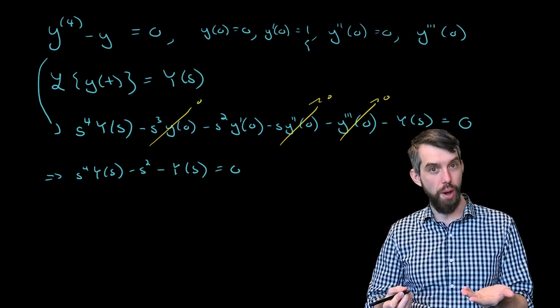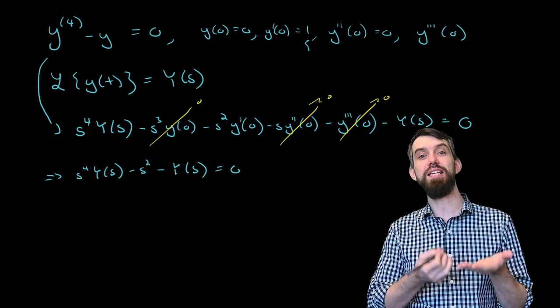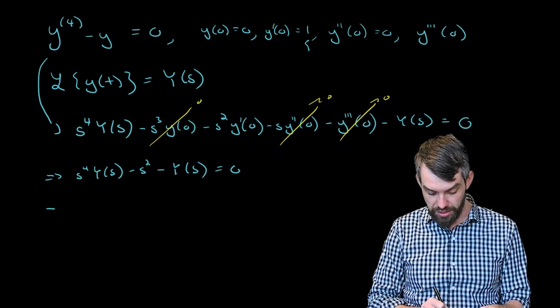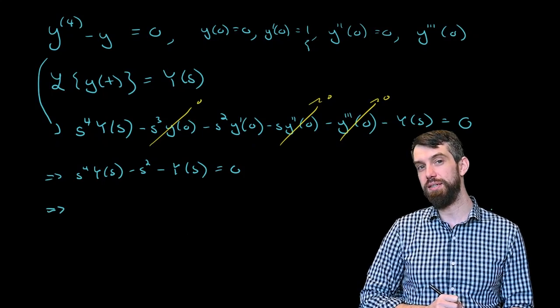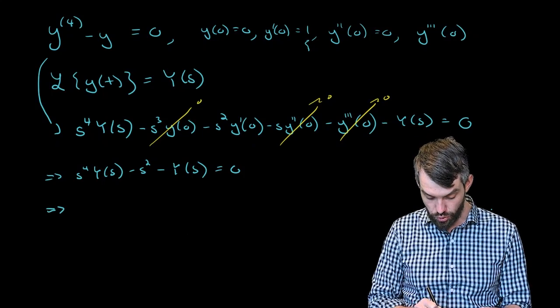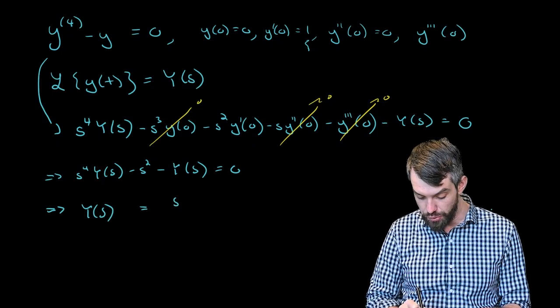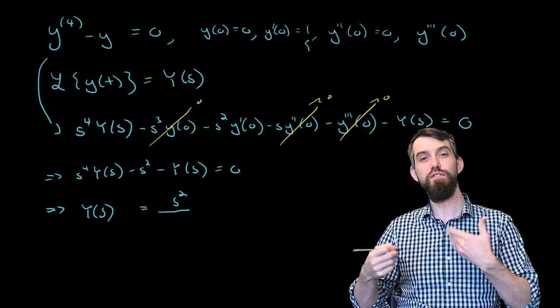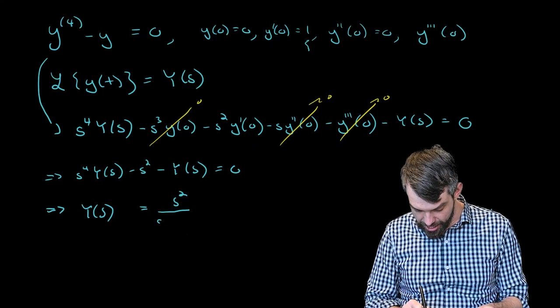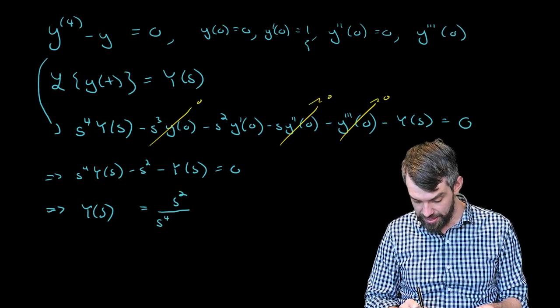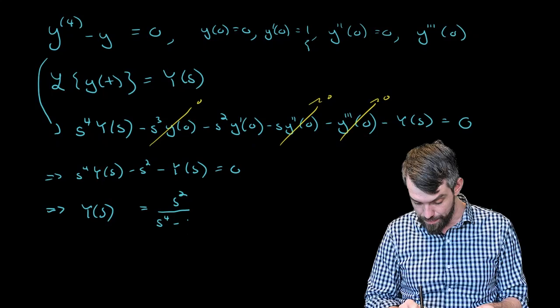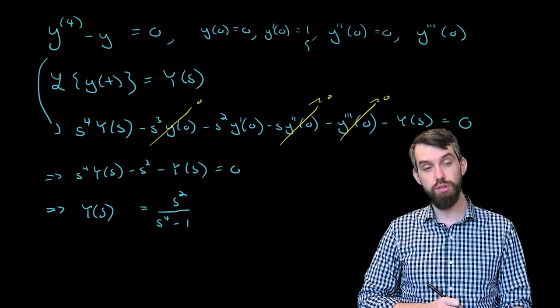Now I have an equation that is an algebraic one, and I want to solve for y as a function of s. This is relatively straightforward. The only thing that doesn't have a y in it is this s squared. So if I leave Y of s on the left-hand side, on the right-hand side I'll move that minus s squared to become a positive s squared. And then the coefficients of Y of s are going to be s to the fourth, and then I also have a minus one for the other term.